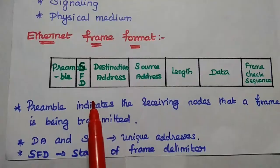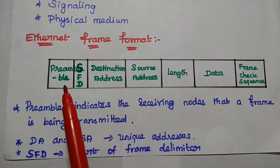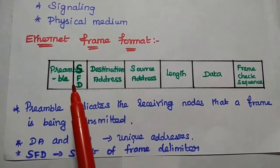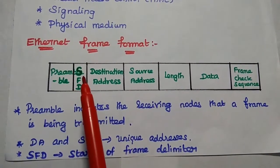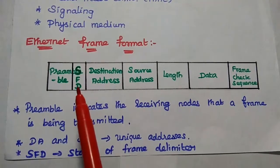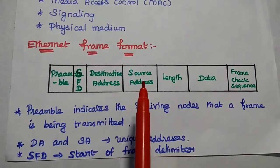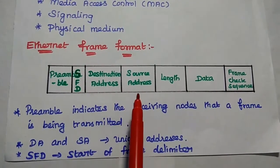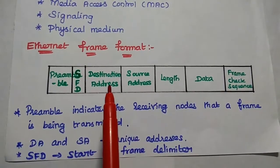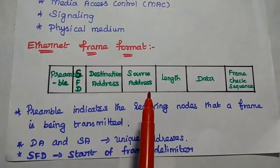Ethernet frame format is given here. Preamble, that is the 7 byte data which indicates the receiving nodes that a frame is being transmitted. The next one is 1 byte SFD, start of frame delimiter. Destination address and source address. These two are 6 byte addresses which represent the destination and source of the networking node.